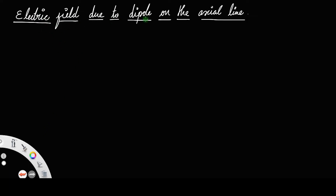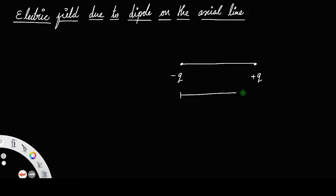Let us discuss the electric field due to a dipole on the axial line. A dipole basically means two equal and opposite charges. Let us say there is a minus q charge here and a plus q charge here — two equal and opposite charges separated by a small distance. This distance is usually taken as 2a.